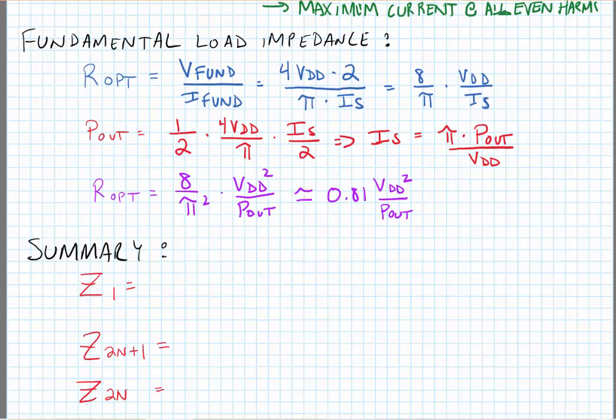The optimum termination resistance for a class F amplifier at the fundamental frequency is approximately 0.81 times VDD²/Pout. This is slightly better than for the class E. If you'll recall, the class E relationship for Ropt was equal to 0.577 times VDD²/Pout. This means that a class F amplifier uses a slightly higher value of optimum termination resistance in order to deliver the same output power, so we'll see less losses in the matching network if other things were equal.